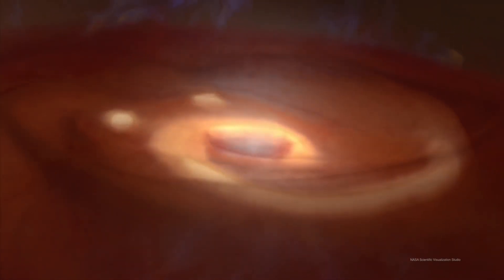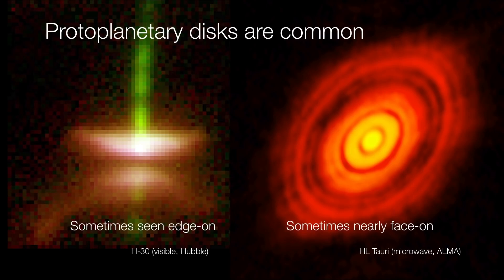These protoplanetary disks are fairly common. Sometimes we see them edge-on, or sometimes nearly face-on. When seen at microwave wavelengths, as we have here on the right-hand side of our screen, you can make out the distinctive rings and spoke-like features of this disk. This is significant because it means proto-planets inside this protoplanetary disk are beginning to sweep out the concentrations of gas and dust within their orbits.